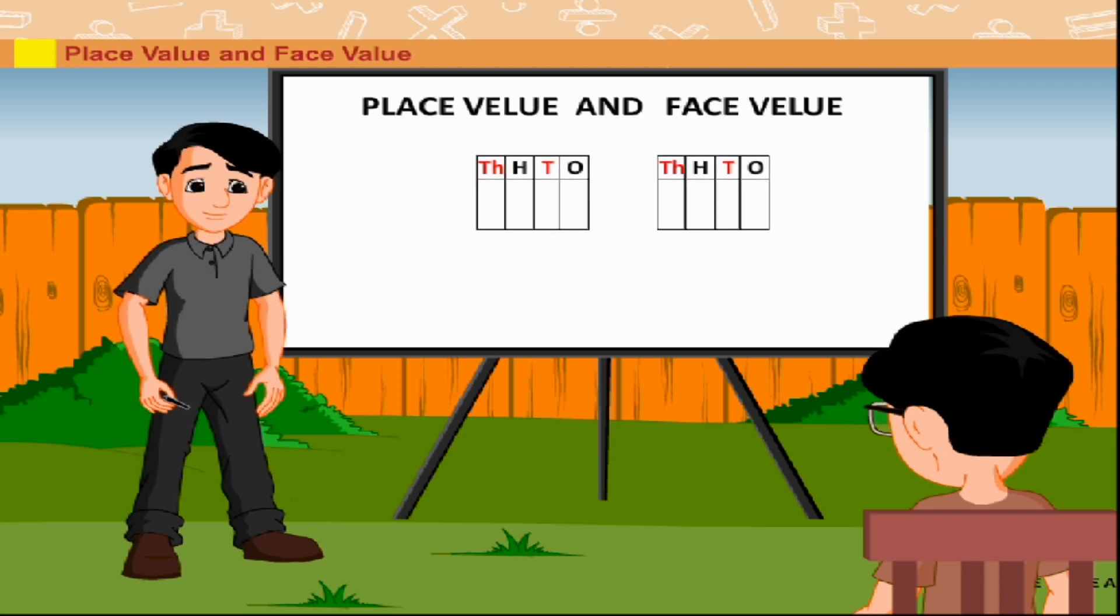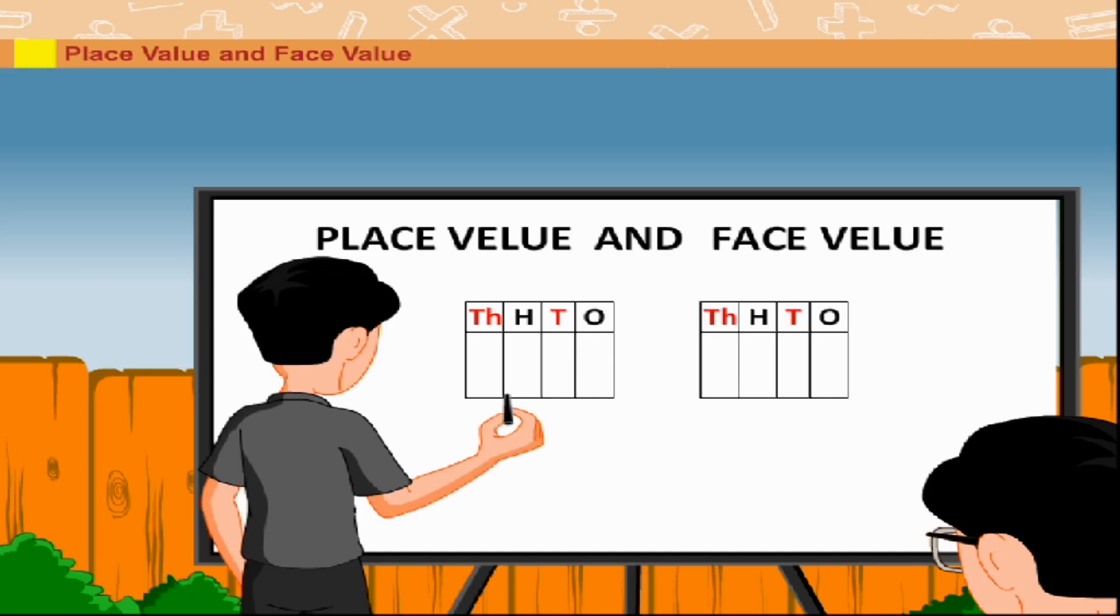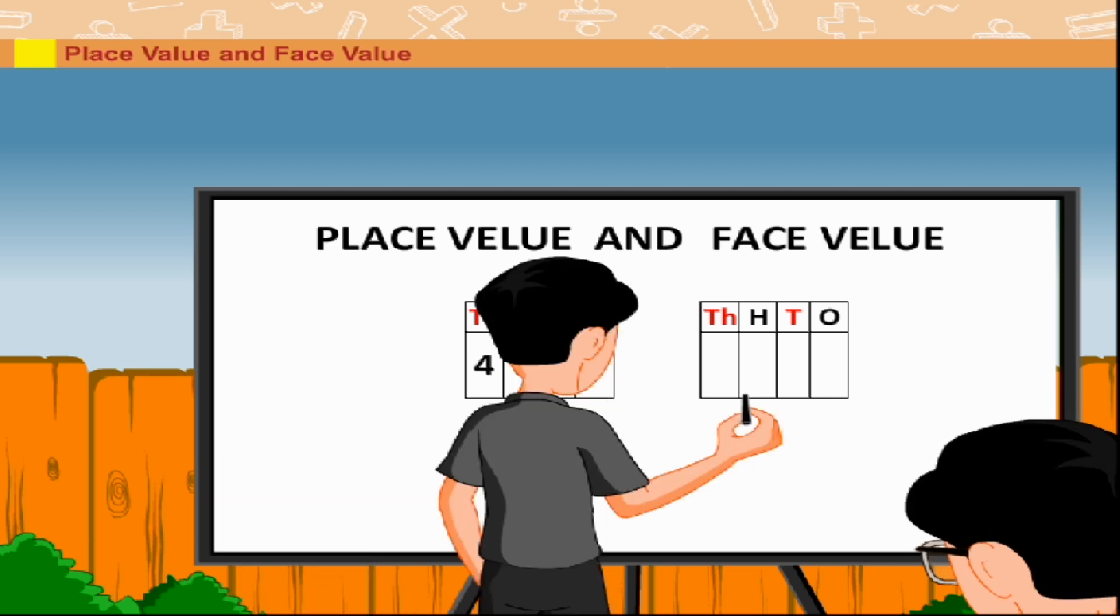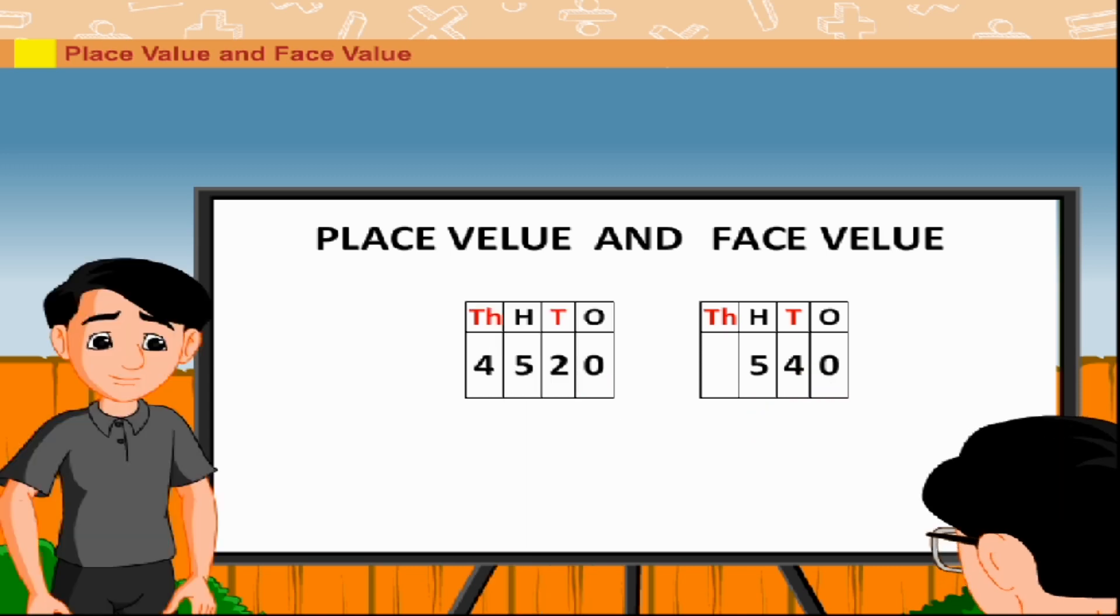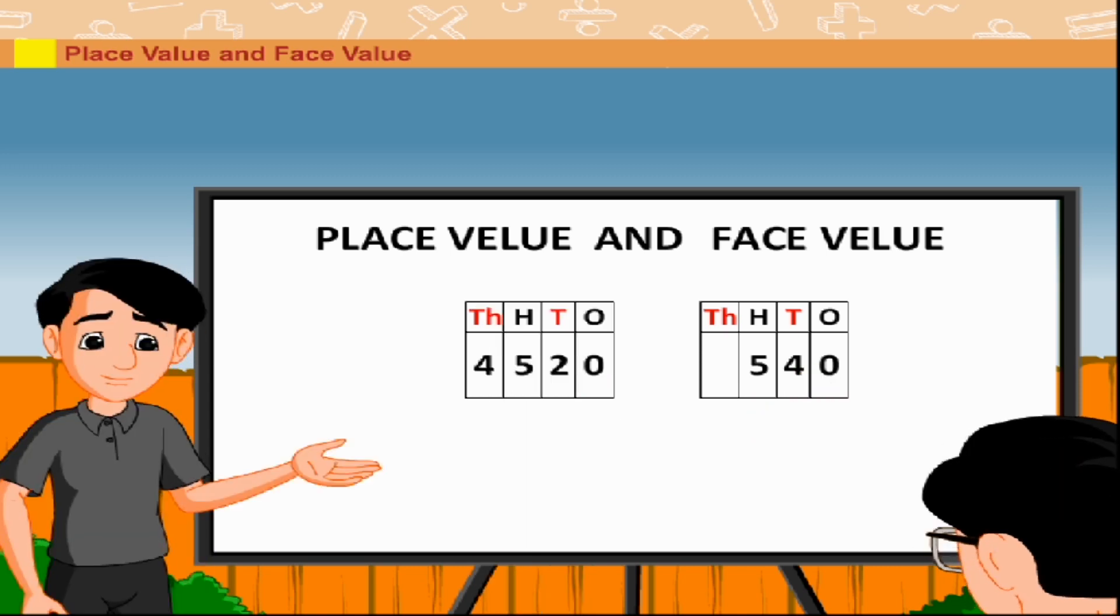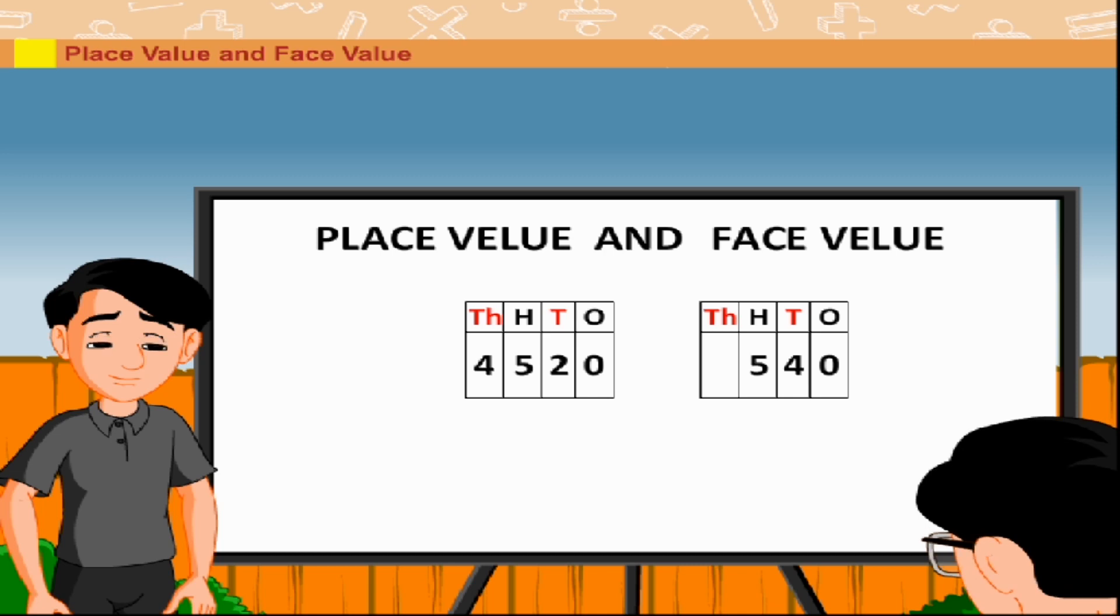He writes two numbers, 4520 and 540. He then tells Romi that the place value of a digit helps us to determine its value.